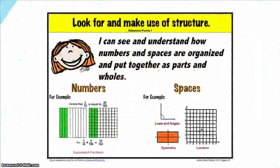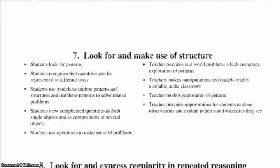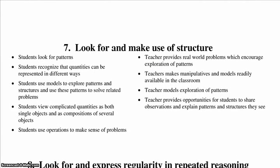Number seven: look for and make use of structure. Mathematically proficient students look closely to discern a pattern or structure. Young students, for example, might notice that three and seven more is the same amount as seven and three more, or they may sort a collection of shapes according to how many sides the shapes have. Later, students will see seven times eight equals the well-remembered seven times five plus seven times three in preparation for learning about the distributive property of multiplication across addition. In the expression x squared plus 9x plus 14, older students can see the 14 as 2 times 7 and the 9 as 2 plus 7. They recognize the significance of an existing line in a geometric figure and can use the strategy of drawing an auxiliary line for solving problems. They can also step back for an overview and shift perspective.